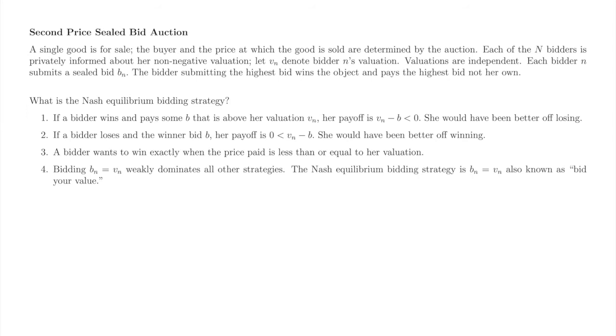The outcome is that the bidder with the highest valuation wins and pays the highest valuation among the losing bidders. The strategy 'bid your value' in the Vickrey Auction neatly coincides with 'drop out at your value' in the Ascending Clock Auction. Furthermore, for any given set of bidders and valuations, the winner and price paid in these two auctions are the same.